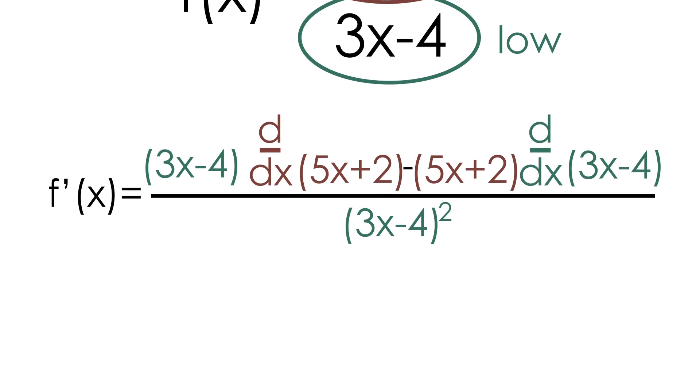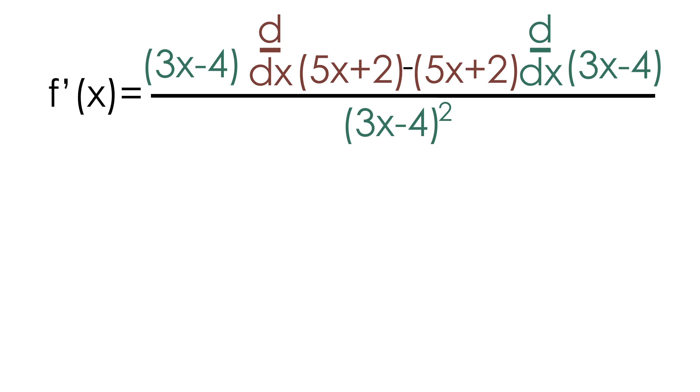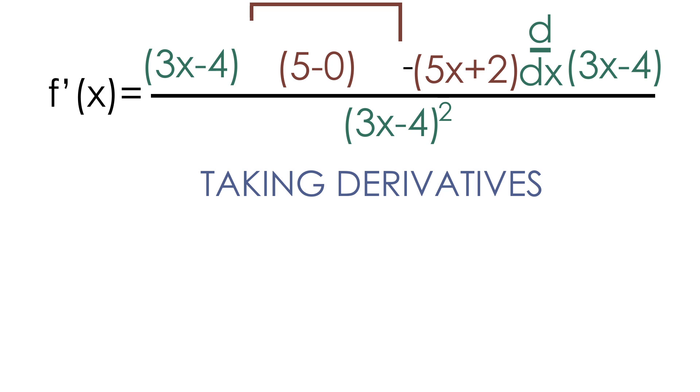So now at this point, the only thing we have to do is simplify as much as possible. So I'll start by taking the derivative of 5x plus 2. The derivative of 5x is just 5, and the derivative of positive 2 is 0, so this just simplifies to 5. And now I can also take the derivative of 3x minus 4. The derivative of 3x is 3, and the derivative of negative 4 is 0, so this just simplifies to 3.